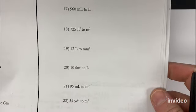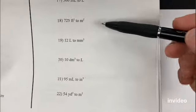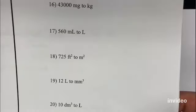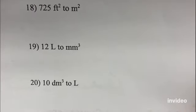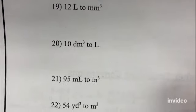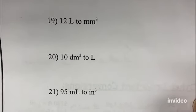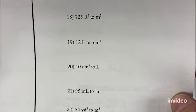Hi chemistry folks. In this video, I want to talk about our last couple of conversions on page 18. I want to talk about how we're going to handle 18 to 22. If you notice, these problems are different. In 18, it's feet squared to meters squared. 19 is liters to cubic millimeters. 20 is decimeters cubed to liters. The reason these are different is that they are area and volume conversions.